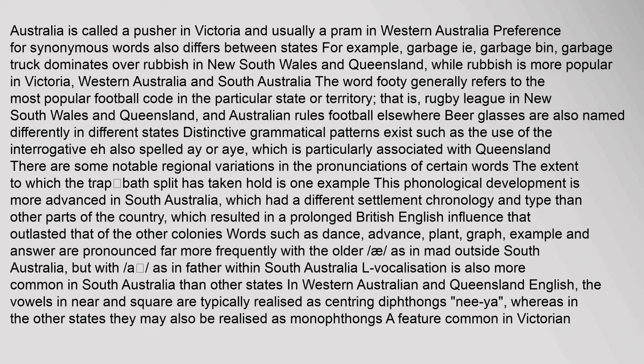Beer glasses are also named differently in different states. Distinctive grammatical patterns exist, such as the use of the interrogative 'ay', which is particularly associated with Queensland. There are some notable regional variations in pronunciations. The trap-bath split is more advanced in South Australia, which had a different settlement chronology than other parts of the country, resulting in a prolonged British English influence. Words such as 'dance', 'advance', 'plant', 'graph', and 'answer' are pronounced with 'a' as in 'father' within South Australia, but with 'a' as in 'mad' outside.